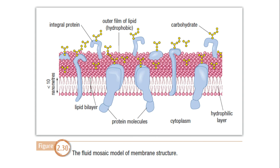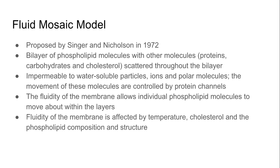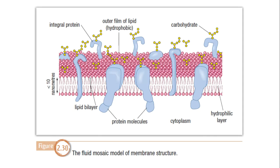The fact that it's fluid means that it slightly moves and that things can pass through it. This model was proposed by Singer and Nicholson in 1972. It has what we call a bilayer of phospholipid molecules with other molecules such as proteins, carbohydrates, and cholesterol scattered through the bilayer. So we've got two layers — a layer on the top and a layer on the bottom. The lipids are the little purple circles, and the blue and yellow are the different carbohydrates and proteins scattered through that bilayer.